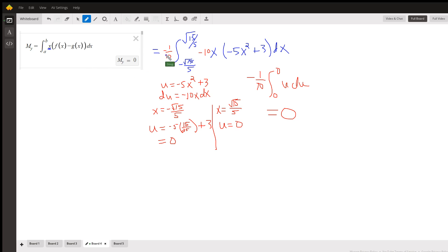By the way, you can't go from 0 to b and double it because this is an odd function. If you graph this function, it probably looks something like this, and this area equals this area.